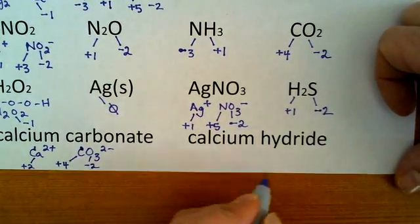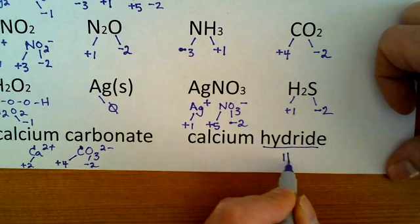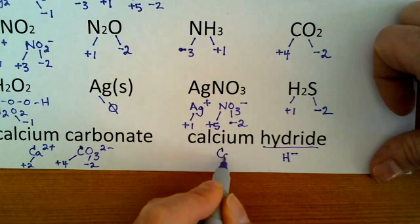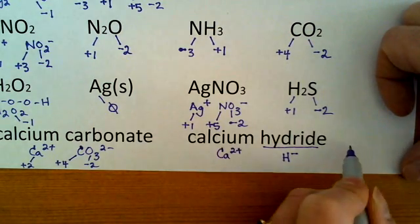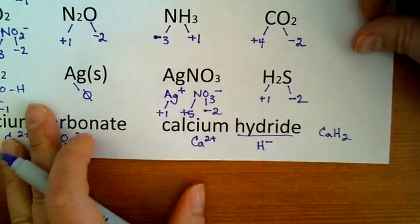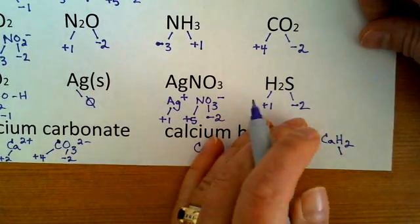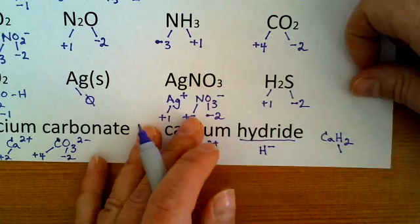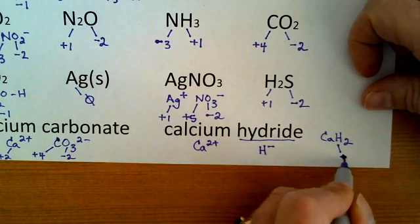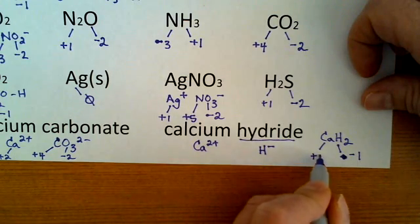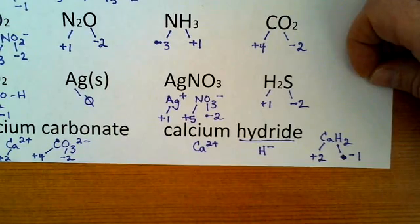And the last one. Calcium hydride. The hydride ion is actually H minus. Not very common. And so when you hear hydride, hydrogen exists as a hydride ion at negative 1. And calcium is always a 2 plus. Therefore, as a compound, calcium hydride is CaH2. And that means that hydrogen is a minus 1 and this calcium is a plus 2. And that's that.